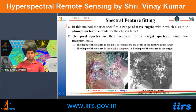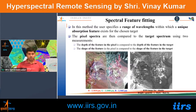Spectral Feature Fitting compares absorption features between image spectra and reference spectra — both the depth and shape of absorption features are compared. This technique was applied to Cuprite, Nevada AVIRIS data using the short-wave infrared region, where alunite minerals appear bright wherever present in the classified output.